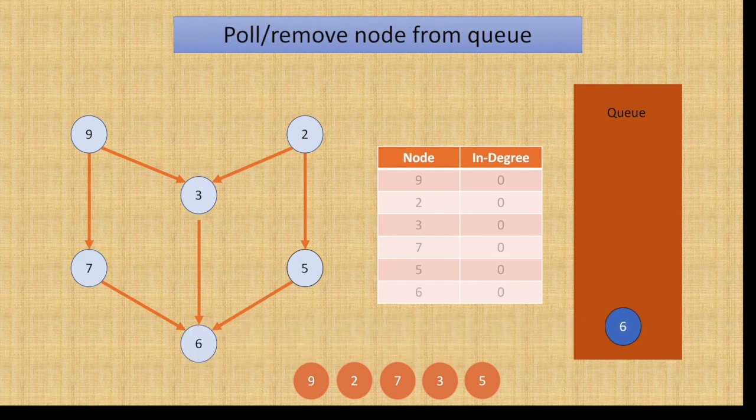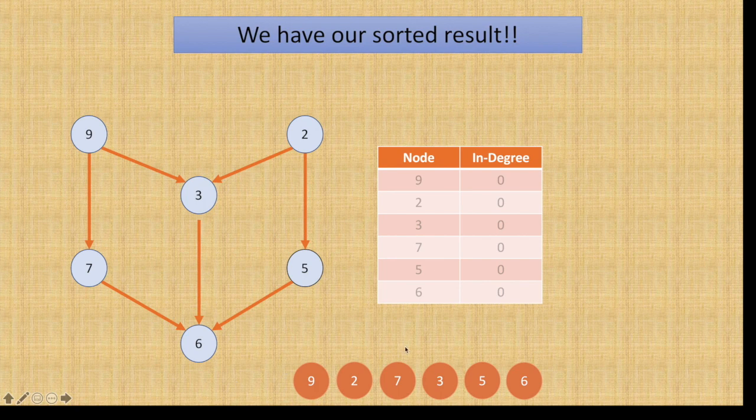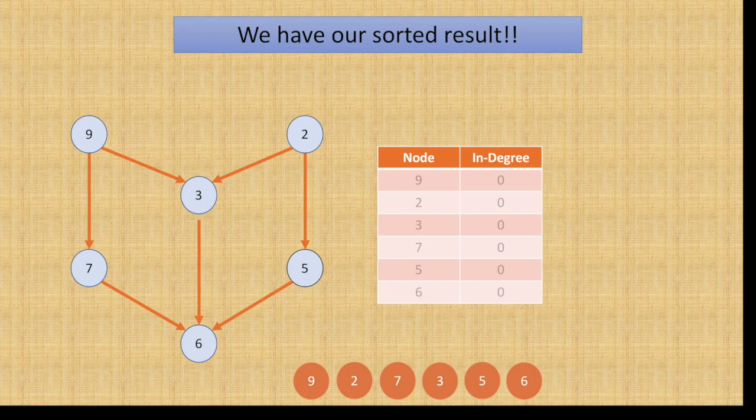And finally, poll it out, and we have our final sorted result. So if you see, this result may not be unique. We can have other variations also. For example, node 2 could have come before node 9, node 5 could have come before node 7 as well, and we could have ended up with a different variation altogether. But I guess you got the concept of what we are doing.